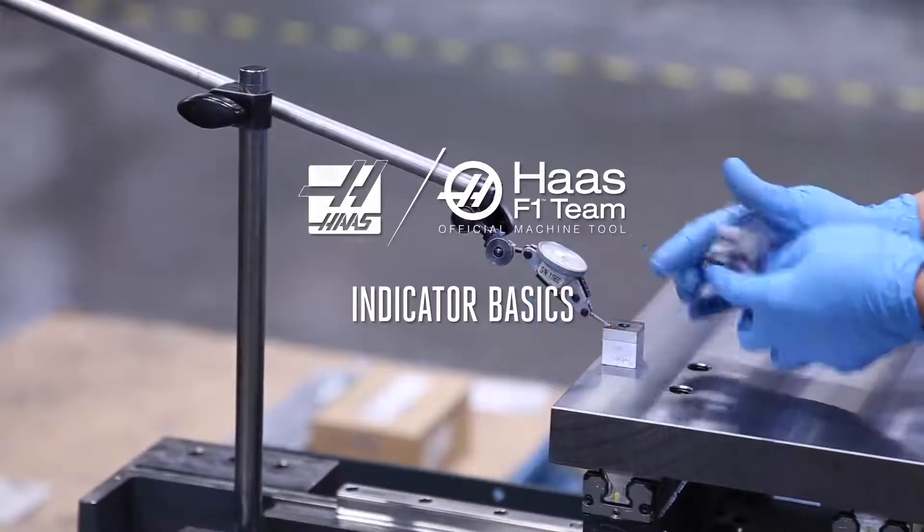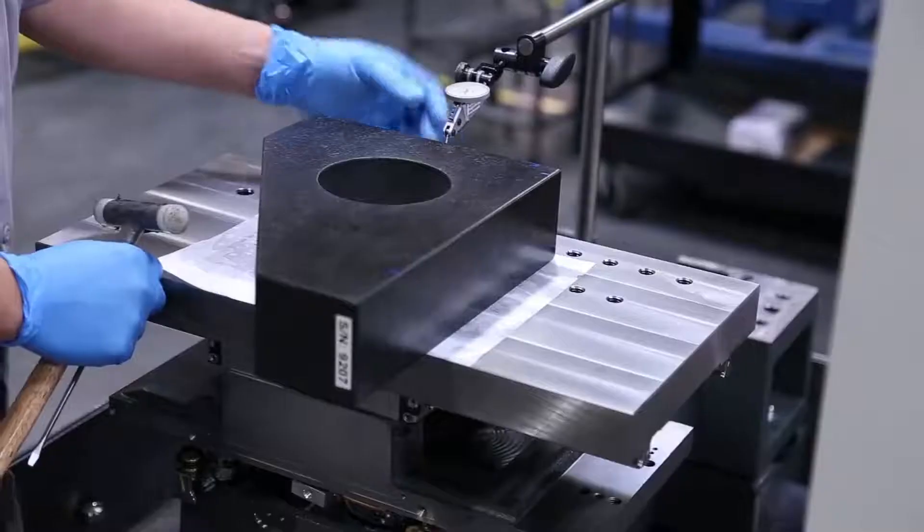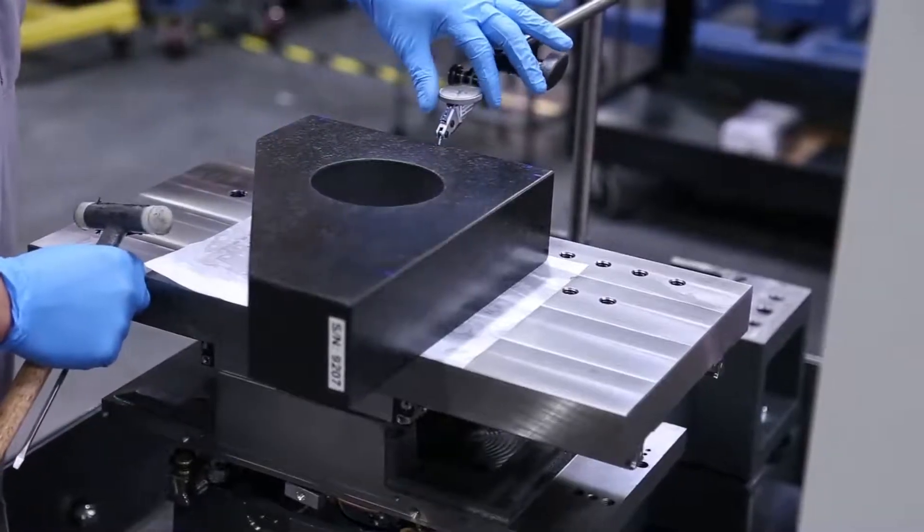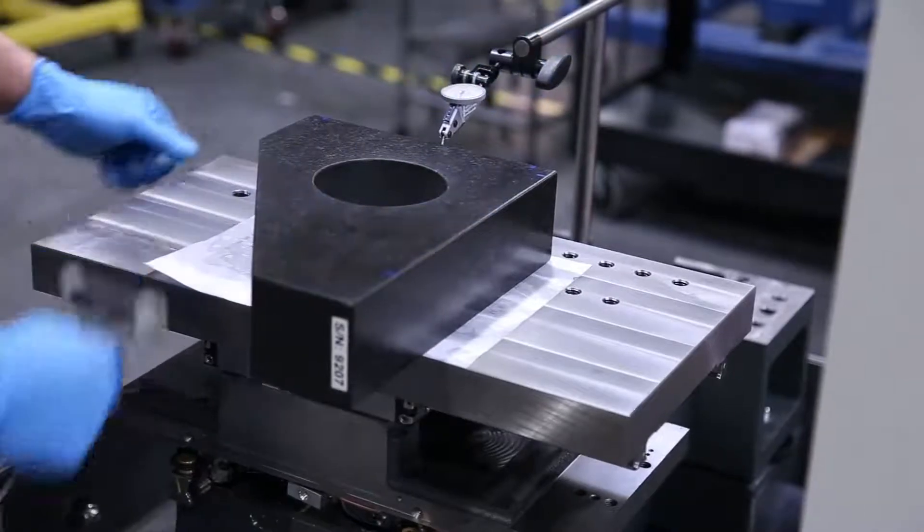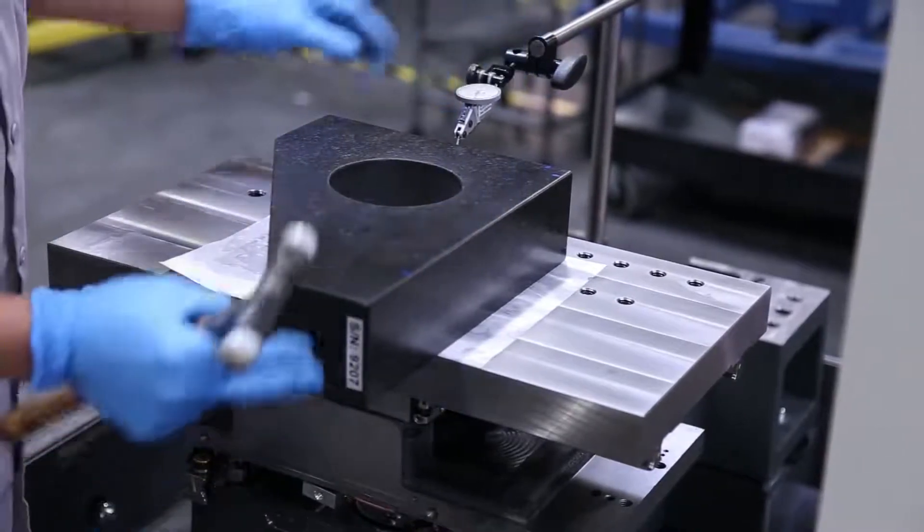An indicator is a basic tool in machining, building machines, and fixing machines. You use it to make extremely fine measurements to ensure that things are made or assembled correctly.